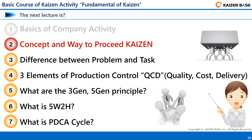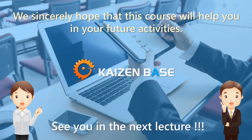This concludes the lecture: Basic Course of Kaizen Activity, Fundamental of Kaizen, Chapter 1 — Basics of Company Activity. Let's continue with the study of Chapter 2: Concept and Way to Proceed Kaizen. We sincerely hope that this course will help you in your future activities. See you in the next lecture.